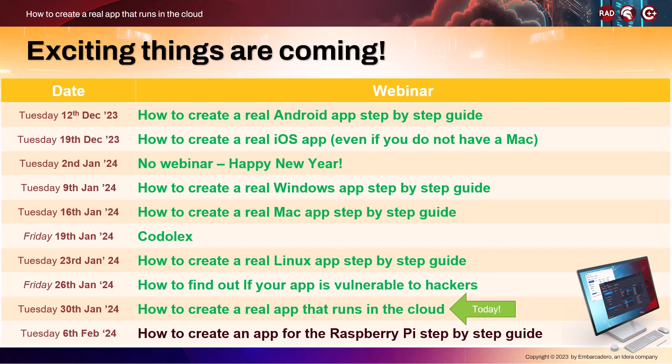So far we've had a pretty packed schedule. We've covered Android apps, iOS apps, and we also created a Windows app. We then created a similar app using the Mac, and we even had a webinar about Codalex, which is a really fascinating UI tool that creates the back-end business logic. Last time we did two webinars: How to Create a Real Linux App, running on Ubuntu, and then a great webinar with Andy from Der Secure, showing static code analysis, dynamic analysis, and supply chain security — very interesting stuff.